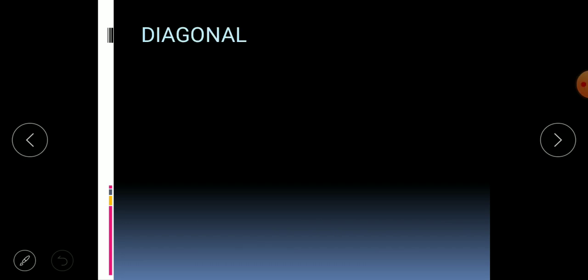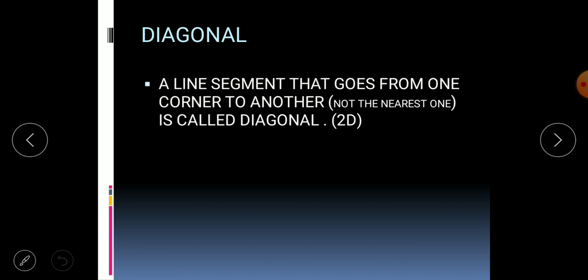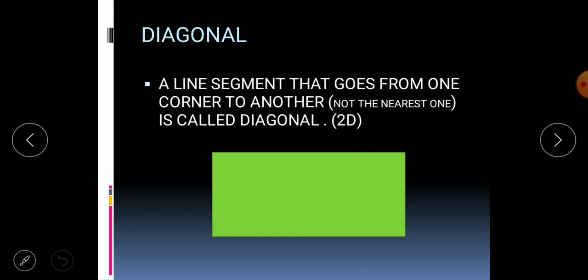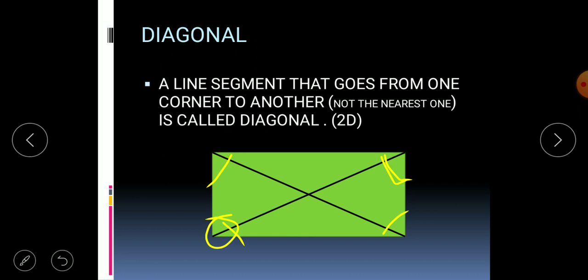Now let's look at the next term: diagonal. A line segment that goes from one corner to another — not the nearest one — is called a diagonal. In a rectangle there are four corners, and the line segment going from one corner to the opposite corner is a diagonal. There are two diagonals in a rectangle.